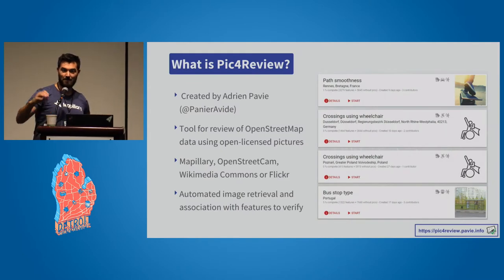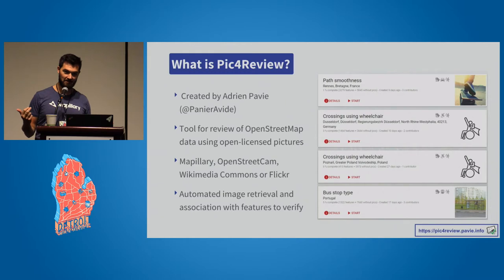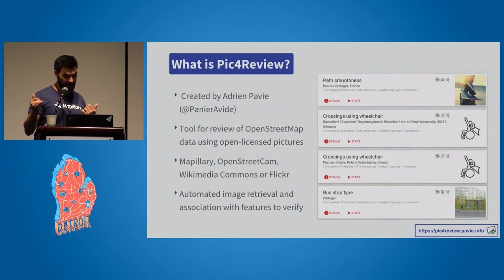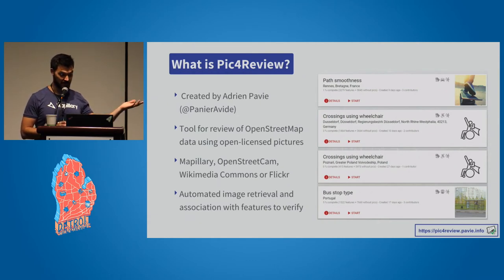Let's talk about what Pic for Review actually is. Created by Adrian Pavier, Adrian came up with this idea to use pictures for reviewing any type of geospatial data, and this morphed eventually into a tool for using pictures to take existing OpenStreetMap data and add more detail to it or verify and validate it. He uses open license pictures, including MapLarry, OpenStreetCam, Wikimedia Commons, or Flickr, and uses the different APIs with OSM, focusing on different types of missions — such as smoothness of a road, wheelchair crossings, or bus stop types.